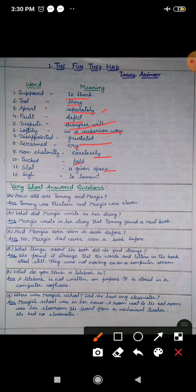Slot - a given space, kishi cheez ke liye di hoi jag hai, is called slot. Sigh - to lament, parishan ho na, kishi cheez ke liye dukhi ho na, is called to lament.